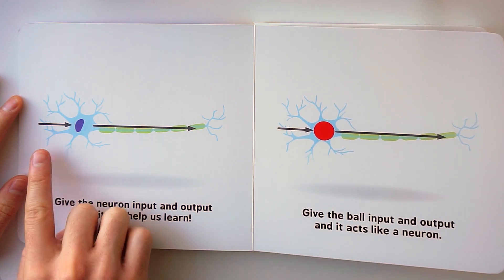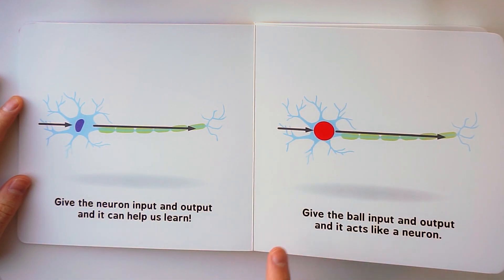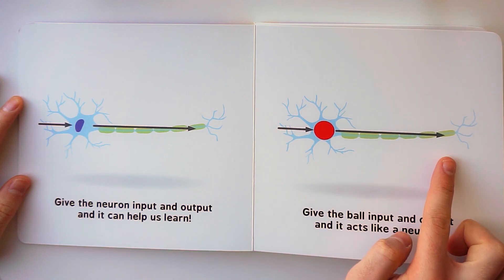Give the neuron input and output and it can help us learn. Give the ball input and output and it acts like a neuron.